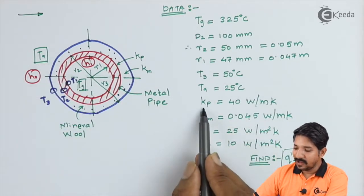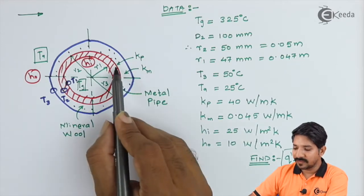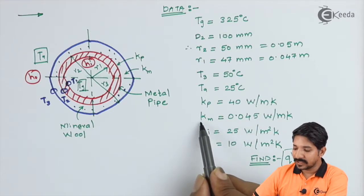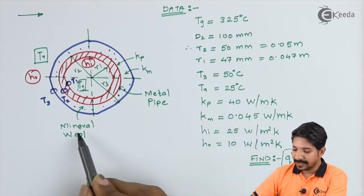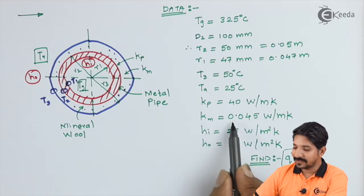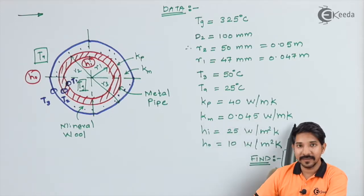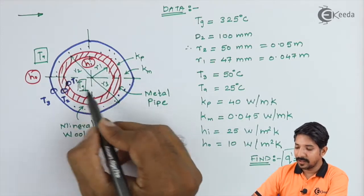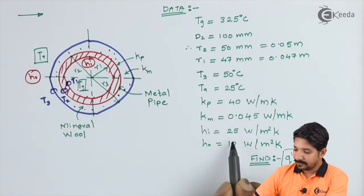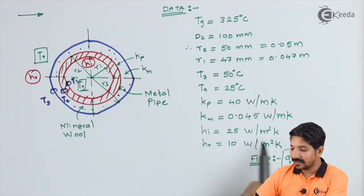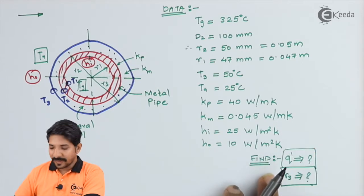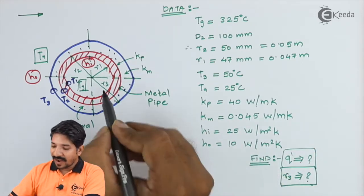The ambient air temperature Ta is given as 25°C. Thermal conductivity of the pipe kp = 40 W/mK, thermal conductivity of mineral wool km = 0.045 W/mK, hi = 25 W/m²K, and ho = 10 W/m²K. They are asking us to find r3 such that T3 reaches 50°C, and also to find the heat transfer rate Q'.